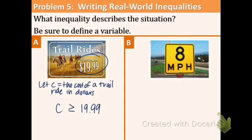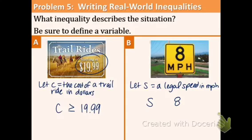Now the last part, part B, speed limit. 8 miles per hour. Wow, that is super slow. Let's define S equals legal speed in miles per hour. And what does the speed limit mean? Should you go over the speed limit or under? And if you don't want to take it, you need to go the speed limit or under. Do not go over the speed limit. So we're going to have S. We're going to have 8. And it's going to be less than or equal to because it's okay to go the speed limit. You just cannot go over.